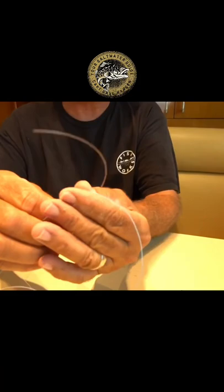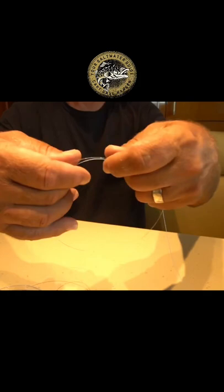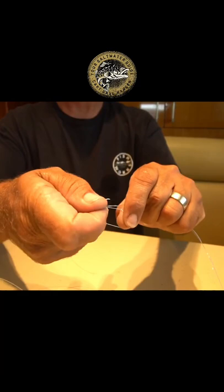It works every time for me and it works great. I lay the monofilament along the side of the braid, the two lines together. I put a loop in the braided line, simple loop. I go over the top of the mono through the hole four times.